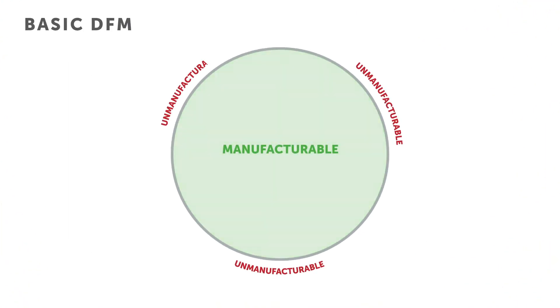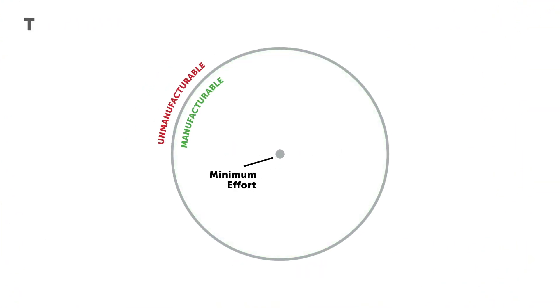With this concept, we can add an effort axis to the manufacturable zone. The point of least effort is the origin. An example is a piece of stock material with no machining. As design requirements increase, the manufacturing effort increases until the unmanufacturable zone is reached.